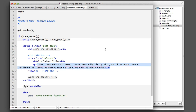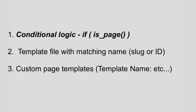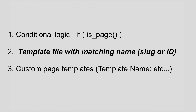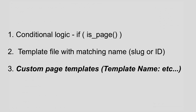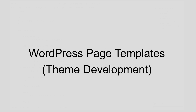Let's review what we learned today. Number one: we can use conditional logic — an if statement — and if that condition is met (e.g., we're on a certain page), include unique code. Number two: we can create new theme files matching the slug name or ID number of a page, and WordPress automatically uses it for that page only. Number three: we can create actual page templates chosen from the WordPress admin screen. Three different ways to send unique code to different pages. Thanks for watching and stay tuned for more WordPress tutorials!